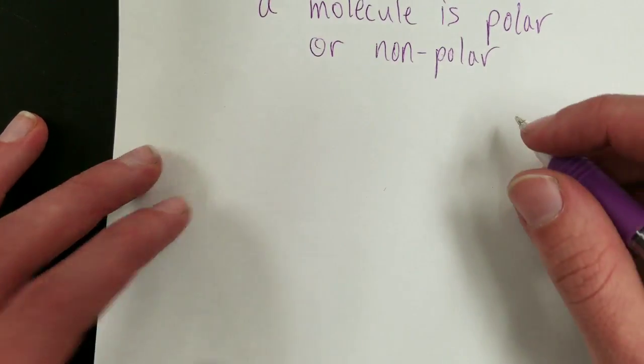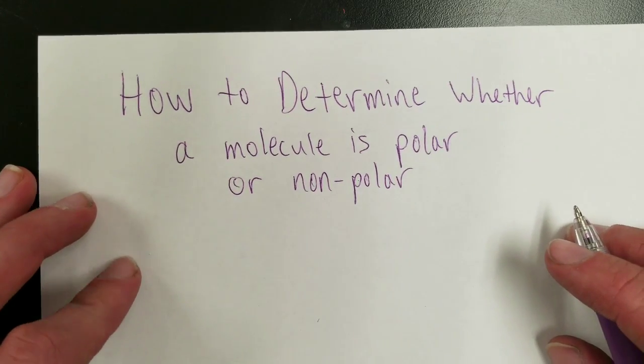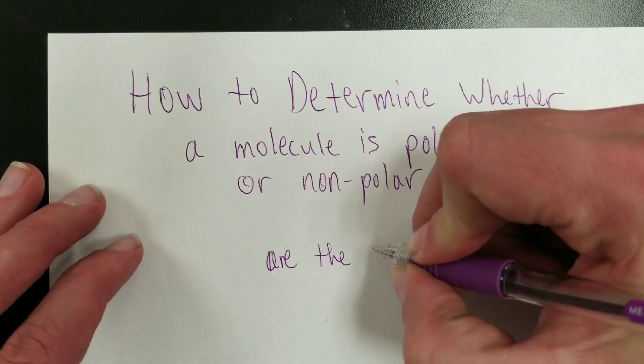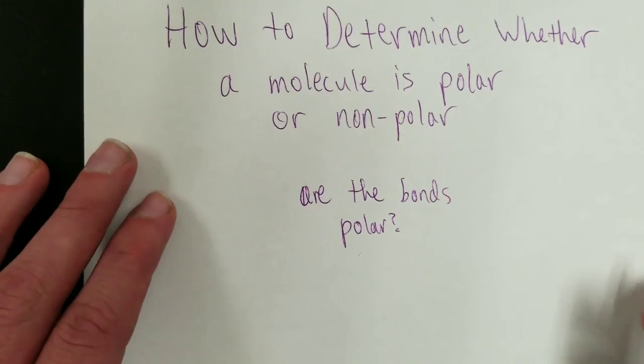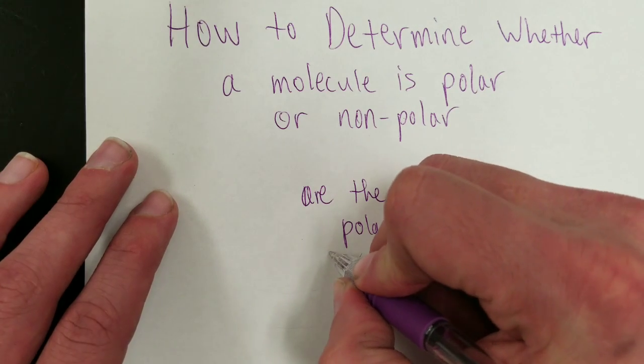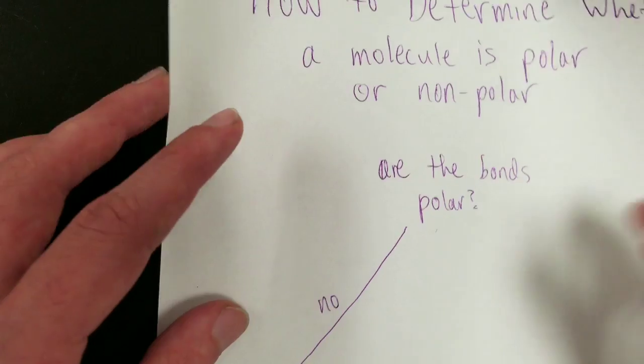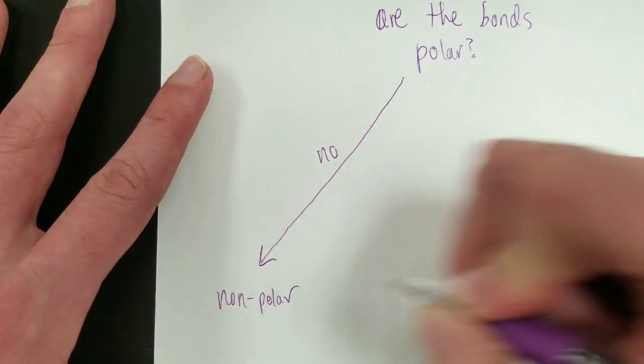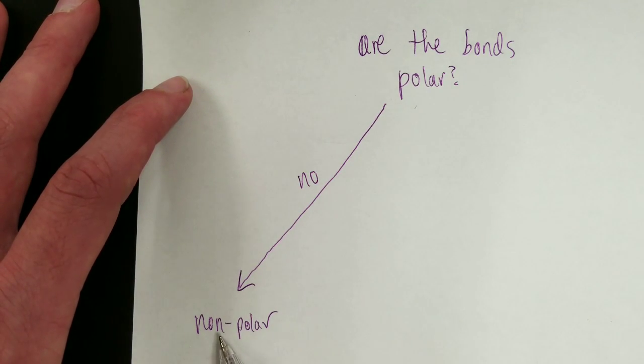Here's another way to put the same idea. So you want to ask how to determine whether a molecule is polar or non-polar. First question is, are the bonds polar? If the answer is no, then you have a molecule that is non-polar, regardless of its geometry. Non-polar bonds makes a non-polar molecule, guaranteed.